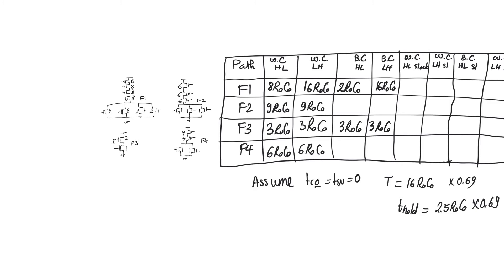For inverter F3, there is no distinction between best case and worst case because there is a single branch in both the pull-down and pull-up networks. Similarly for F4, the low-to-high delay is the same for best and worst case — as is the case for F2. However, for F2 in the pull-down network, we have a best case resistance of R0/3, giving a best case time constant of 3 R0C0. For F4, the best case pull-down time constant is (R0/2) × 6 C0 = 3 R0C0.